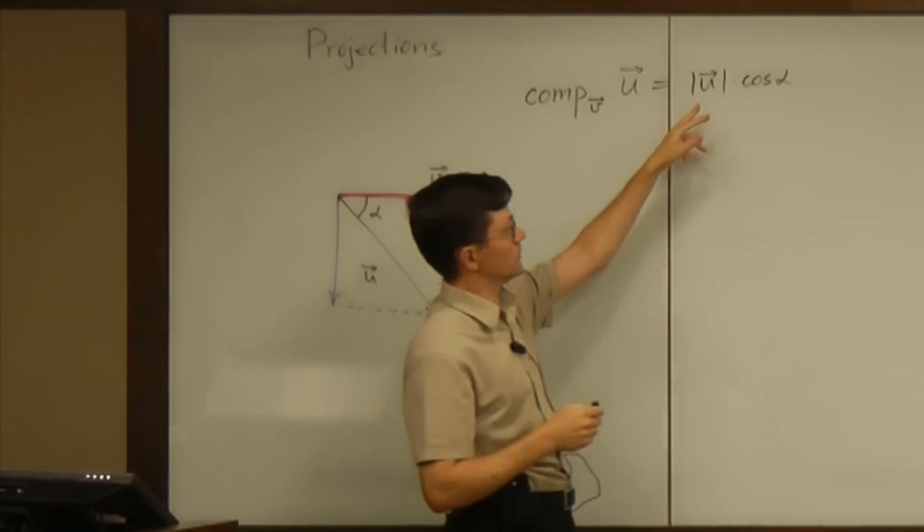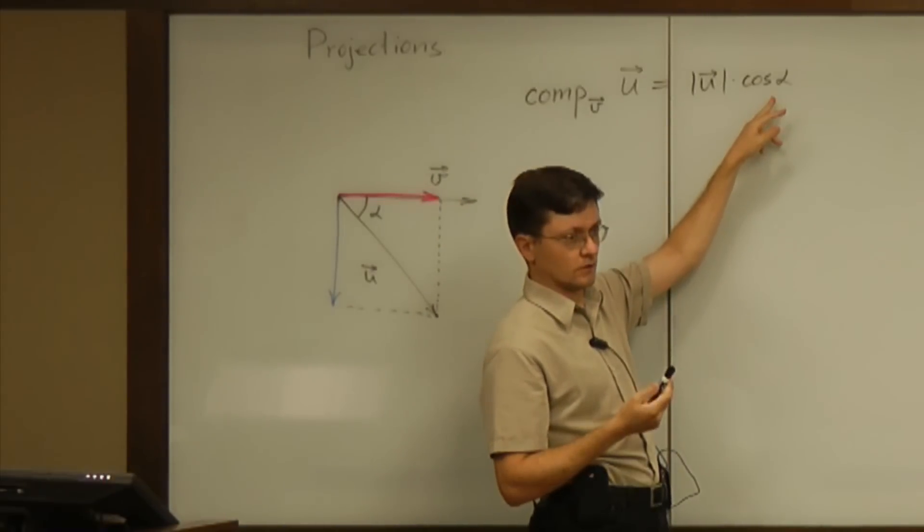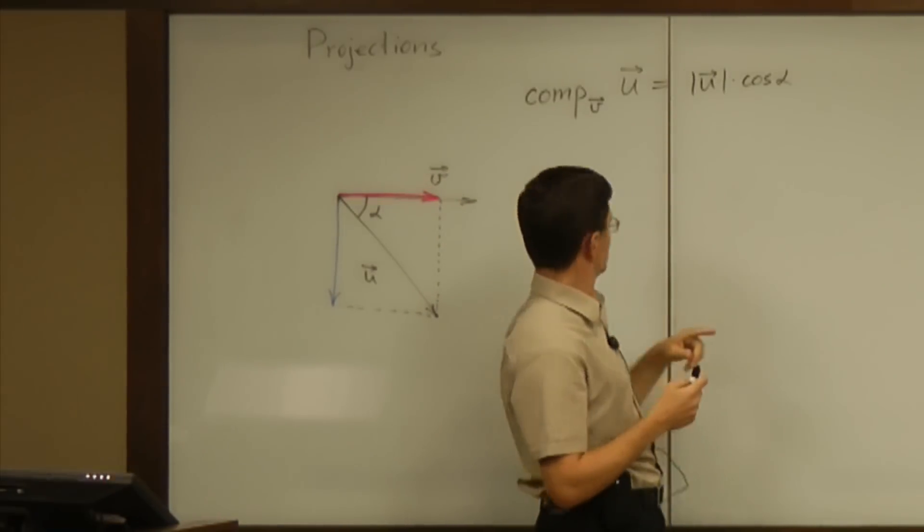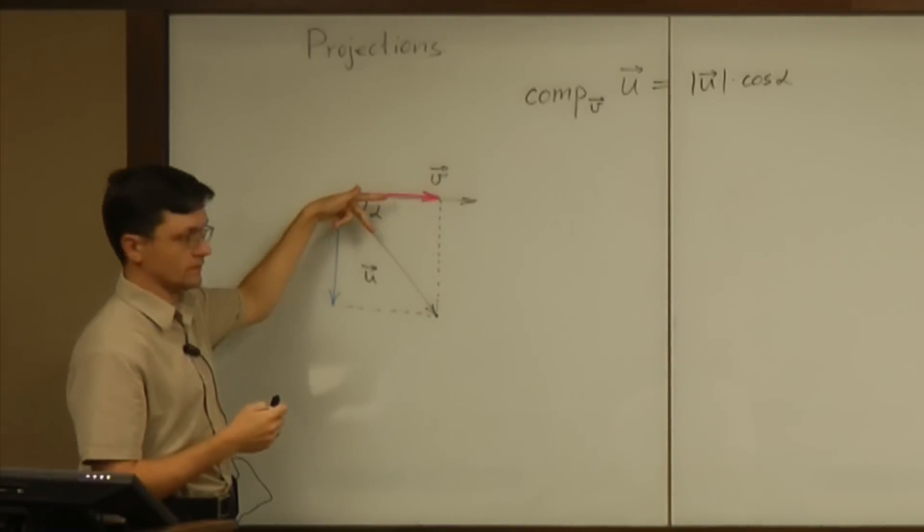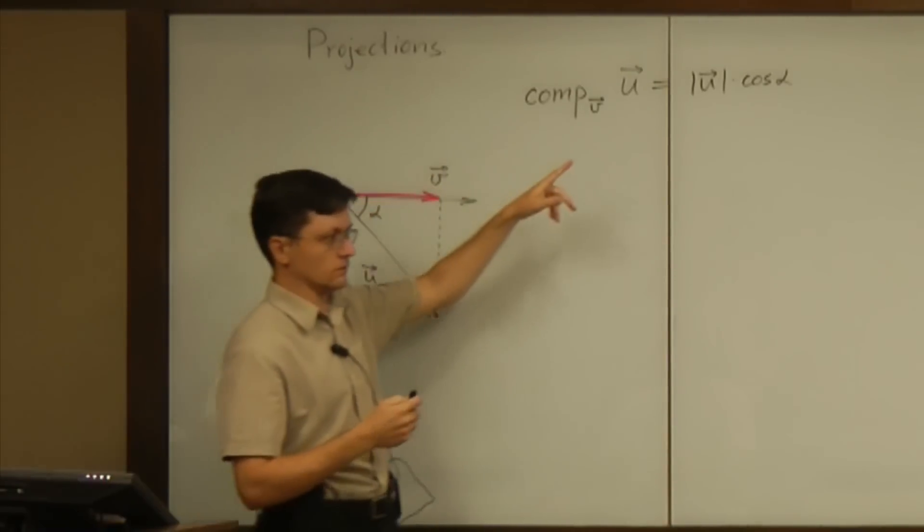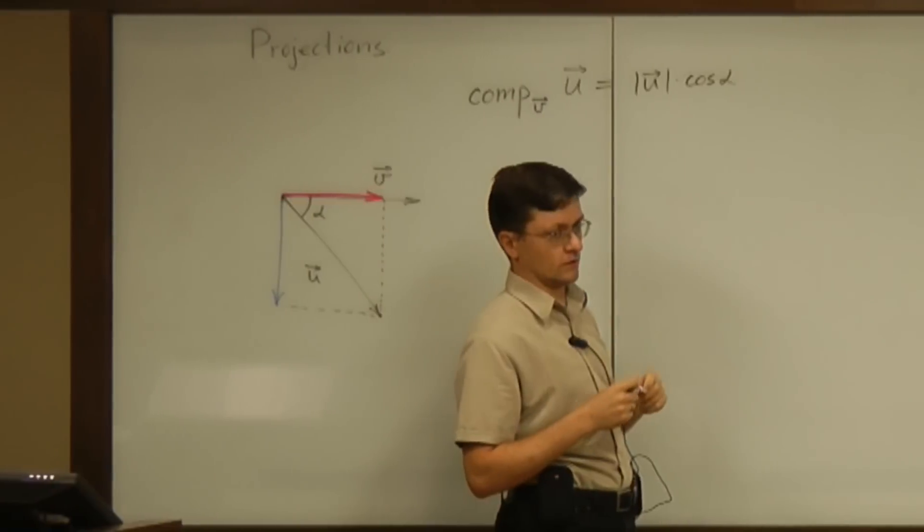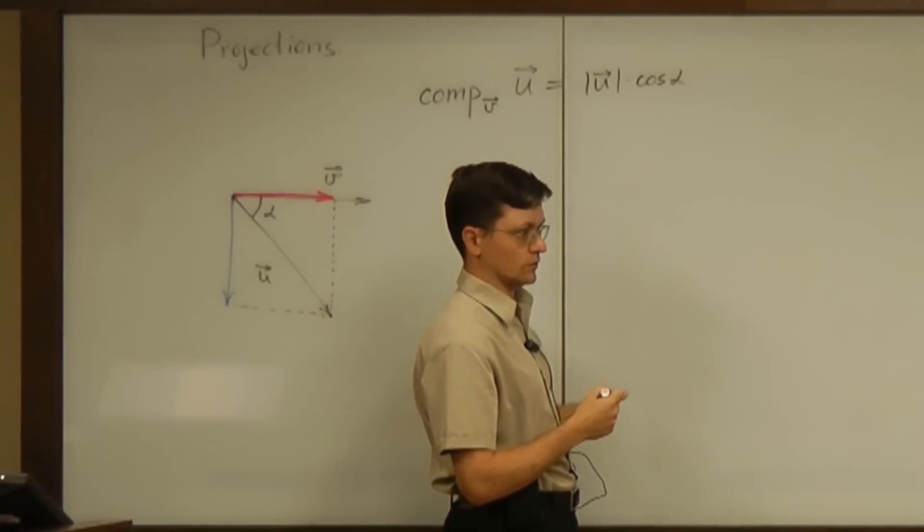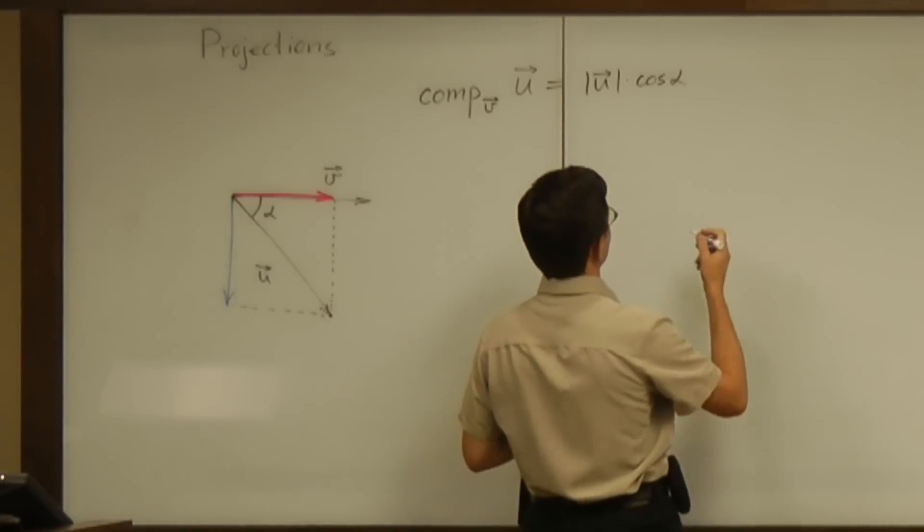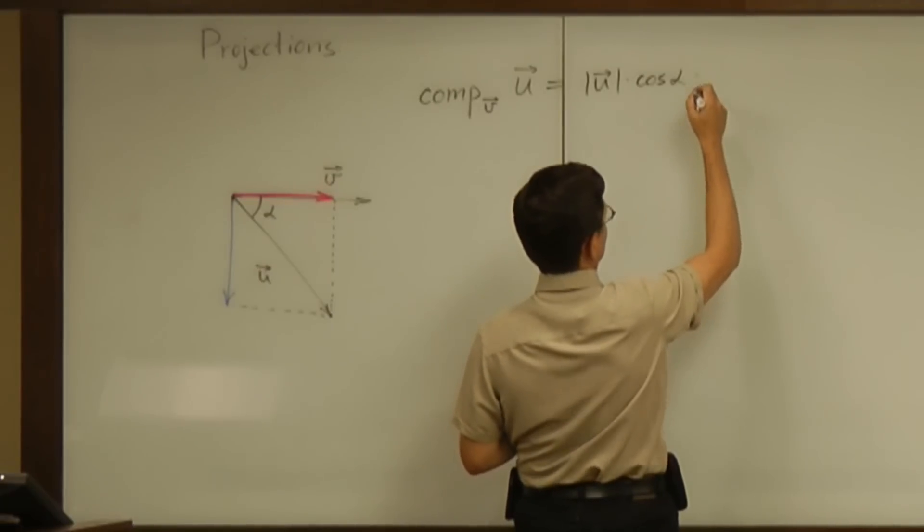Now, from computational point of view, that formula is not highly useful because given two vectors u and v, it is not easy to find the cosine unless you use the dot product and the formula we discussed last time.